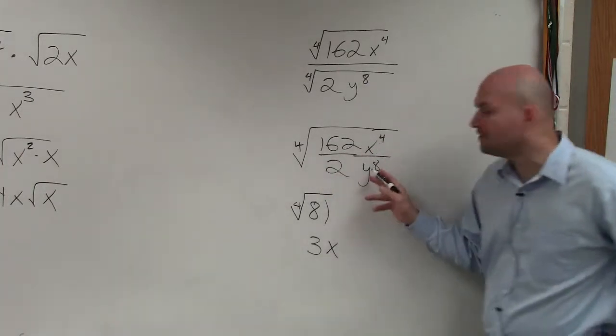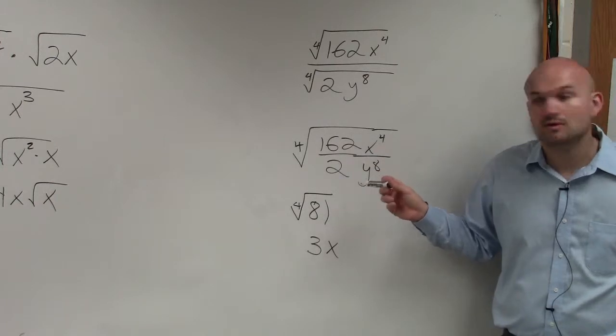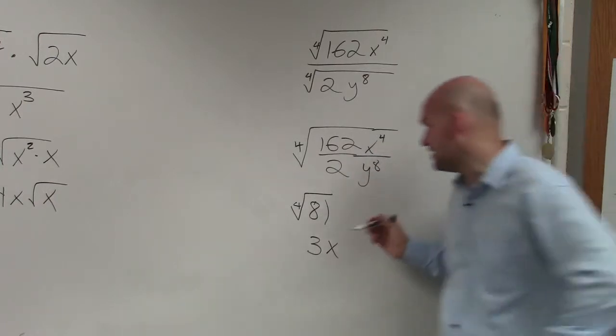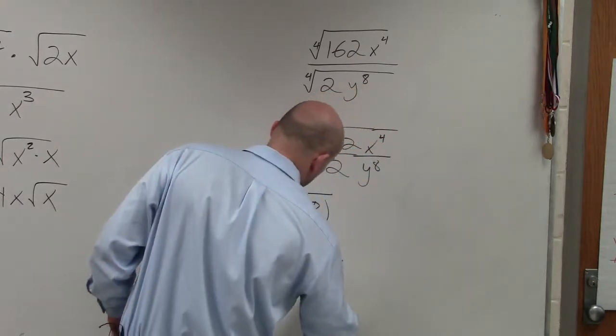And then the fourth root of y to the eighth? y squared. But notice how that y squared is below the x to the fourth, right? So therefore, that's going to remain below here.